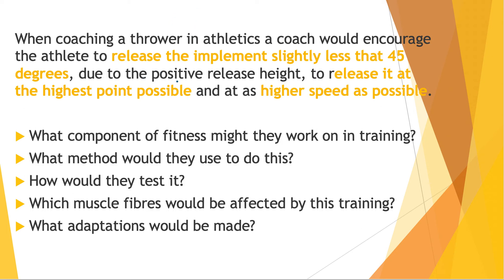So when coaching a thrower in athletics, a coach would encourage the athlete to: firstly, release the implement at slightly less than 45 degrees due to the positive release height; secondly, release it at the highest point possible; and thirdly, release it at the highest speed possible. For a jumper, the angle would be 45 degrees since there's no positive release height, but again we'd focus on the highest speed possible at takeoff.